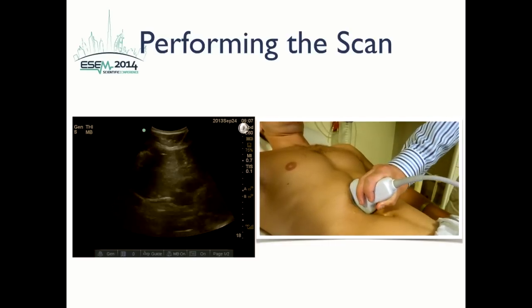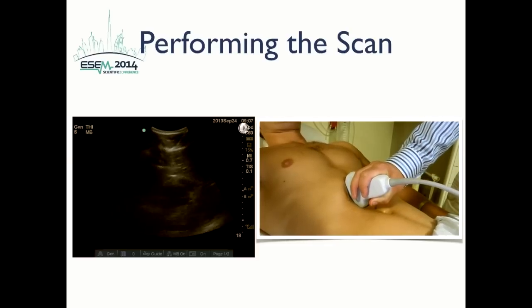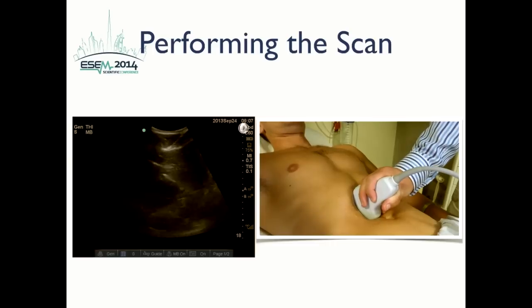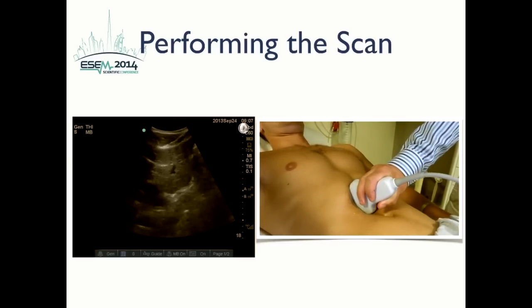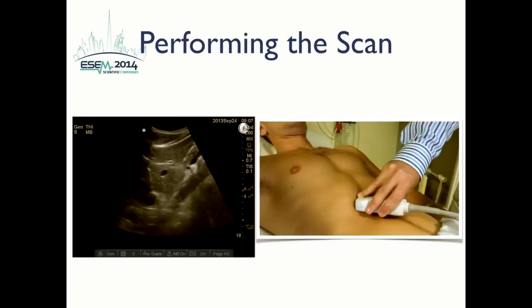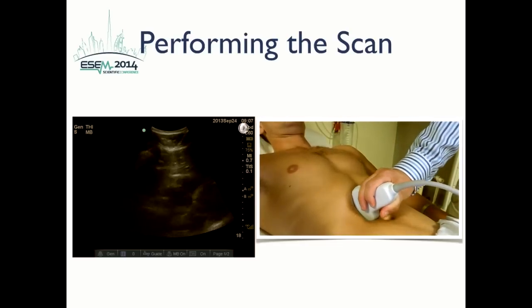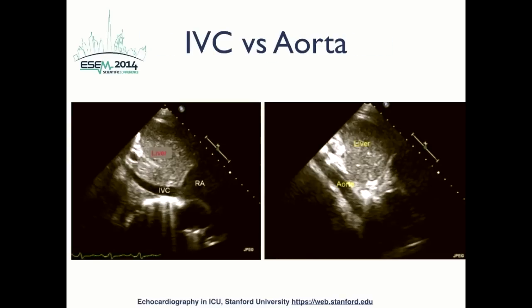Once an appropriate sub-xiphoid view of the heart is obtained, the probe is rotated 90 degrees until the marker is pointing towards the patient's head. At this point, the IVC should be visualized in a longitudinal plane as it enters the right atrium. The IVC going through the liver merging with the right atrium can be distinguished from the abdominal aorta by following the vessel — the most important part is to visualize the IVC entering the right atrium, which is the only way to distinguish it from the aorta.